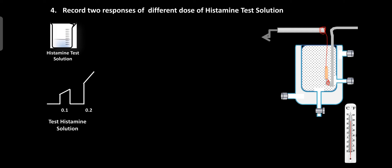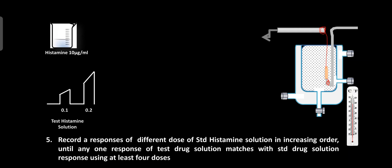After 30 seconds, stop the drum and change the Ringer's solution two to three times until the tissue returns to its original position. After recording the two test responses, record standard histamine solution responses in increasing doses until one of the test responses matches one of the standard responses, using at least four doses. If no match is found within four doses, increase the concentration of the standard.